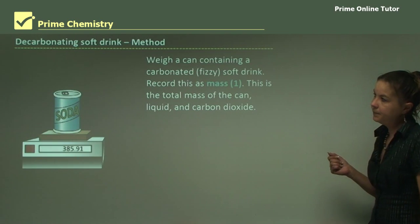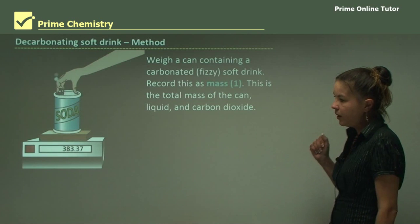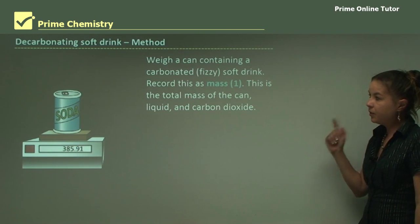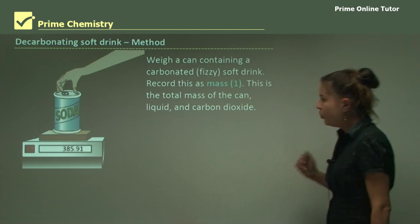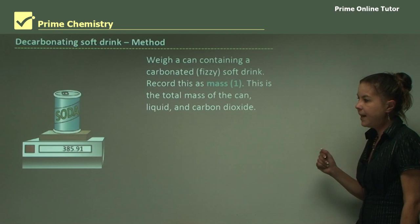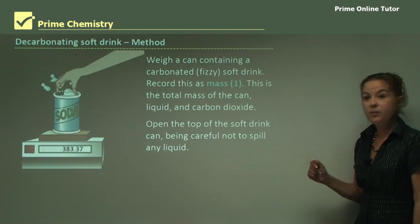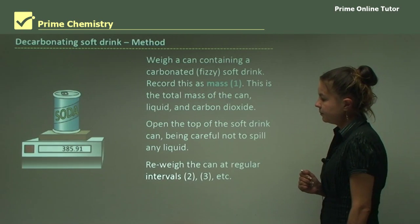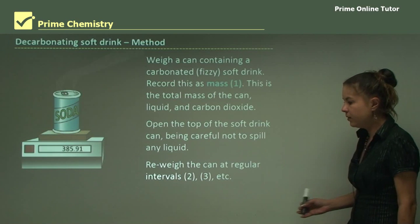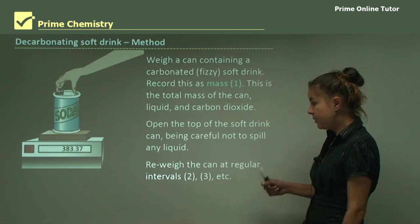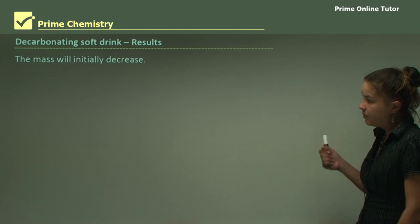The experimental method: first, weigh a 375 mL can of carbonated fizzy soft drink and record the mass - this is Mass 1, the total mass of the can, the liquid, and the carbon dioxide. Second, open the top of the soft drink can, being careful not to spill any liquid as this will change your results. Then re-weigh the can at regular intervals - Mass 2, 3, 4, 5, etc. - recording observations at different time points.